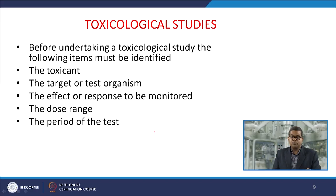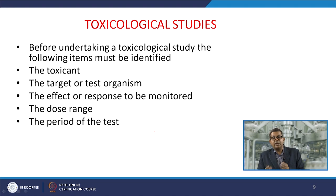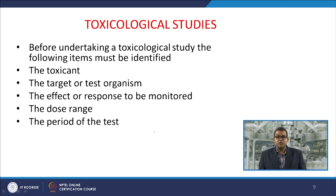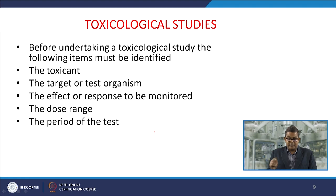Before undertaking any toxicological study, you must identify the following five factors. First, the toxicant — what is the toxicant, what does its Material Safety Data Sheet (MSDS) say, what are the different limits. Second, the target or test organ — where it is going to affect first, where it will deposit first, which organ is responsible for detoxification. You must identify those target organs.